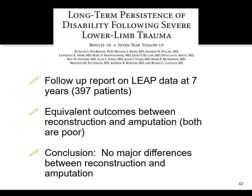Another interesting paper from the LEAP study looked at the differences between reconstruction and amputation, and found no major differences between the two. That makes you wonder when it's better to do one versus the other. When you have a really bad mangled extremity, often the initial gut reaction is that the patient should just be amputated right away — but I find that to be infrequently the case.